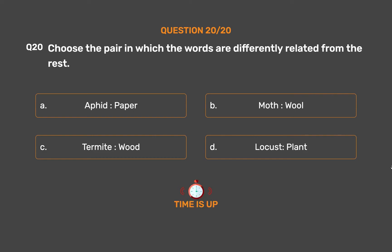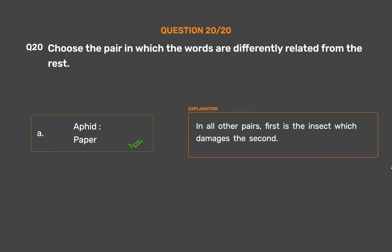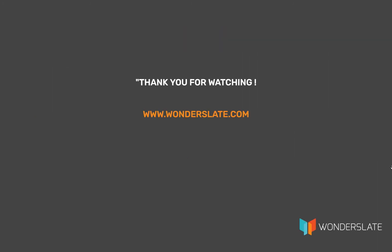The correct answer is Option A: Aphid, Paper. In all other pairs, the first is the insect which damages the second. Thank you for watching the video. If you'd like to practice this quiz, download the Wonderslate app now — link in the description below. If you have any suggestions, feel free to leave comments. If you liked the video, hit the thumbs up and subscribe for more future videos.